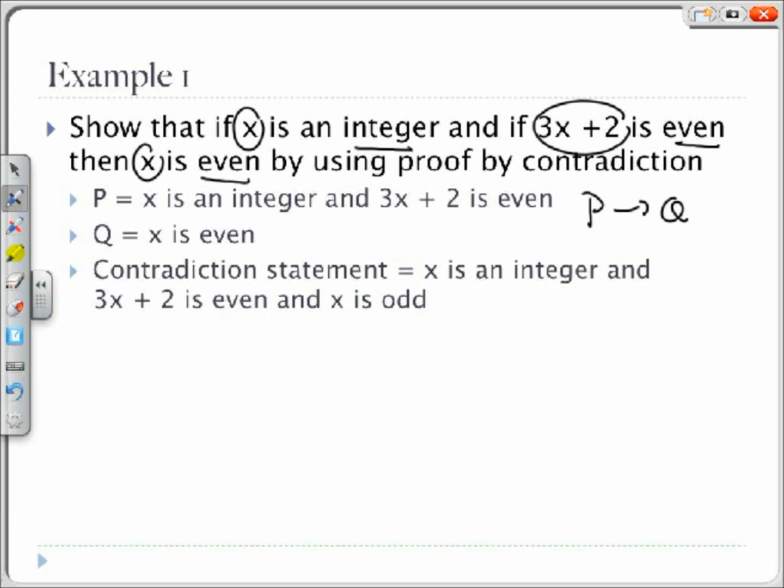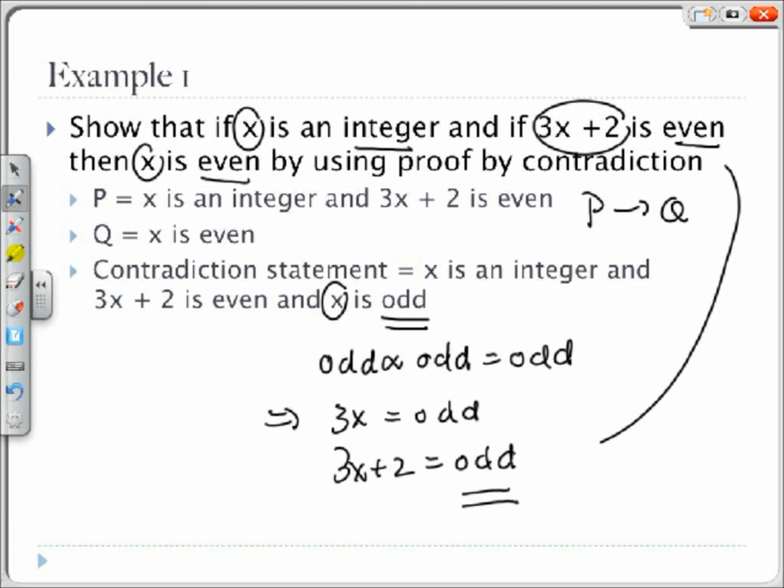Our contradiction statement is that x is an integer, and 3x plus 2 is even, and x is odd. So this is our P and not Q statement. So we are supposing that 3x plus 2 is even, and x is odd. Since x is odd, and the product of two odd numbers is also odd, it follows that 3x is odd. So we can also say 3x plus 2 is odd. This contradicts our first statement that 3x plus 2 is even, and this shows us that x is odd is wrong.